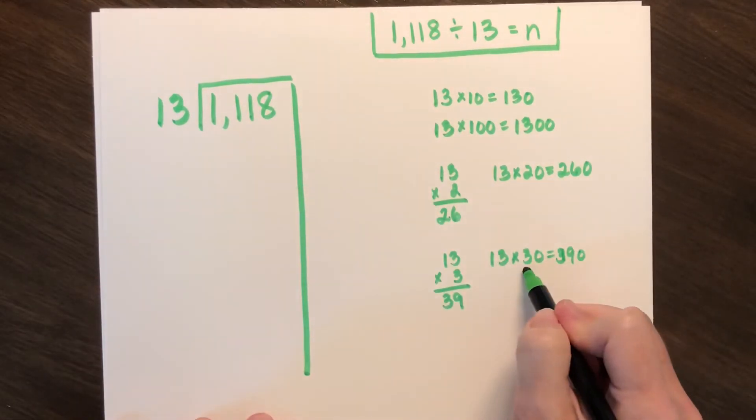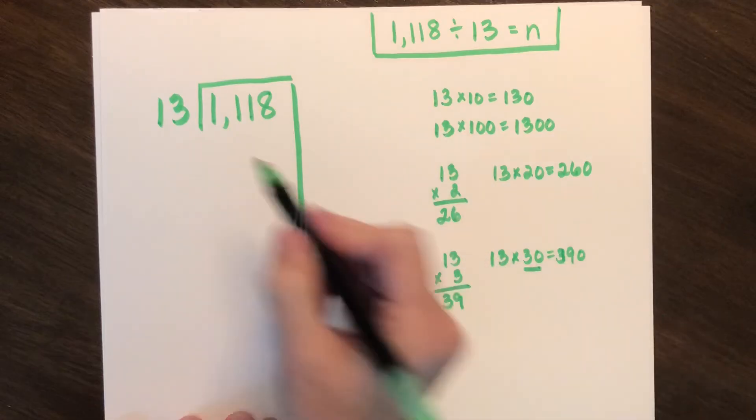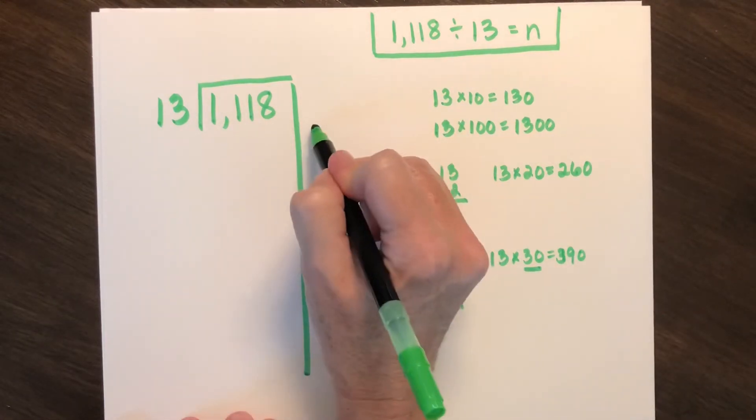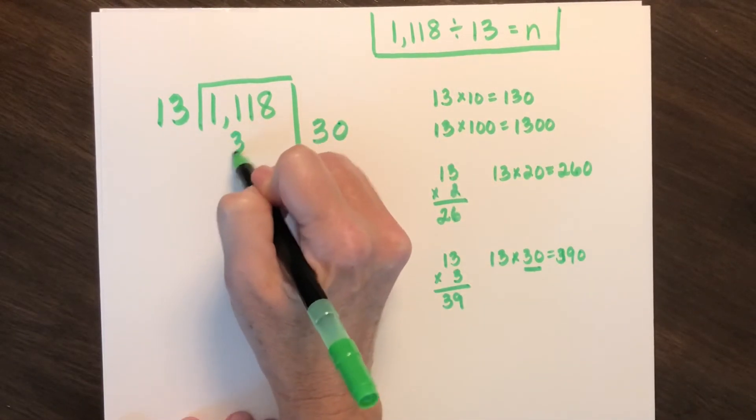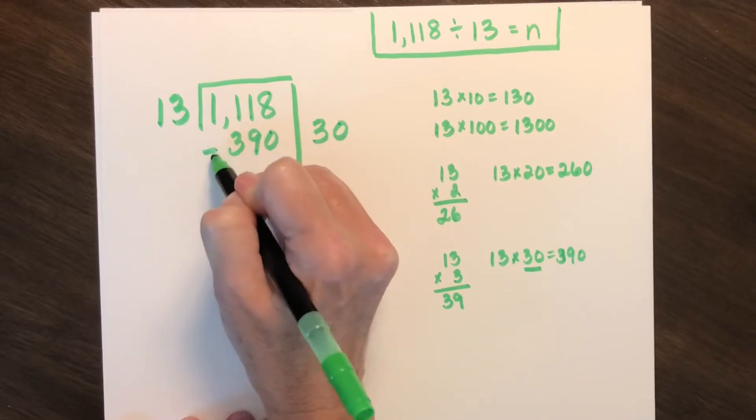13 times 30 would be 390. So I'm going to use this higher multiple, because I can see that it will go into it at least 30 times. So I'm going to subtract 390.